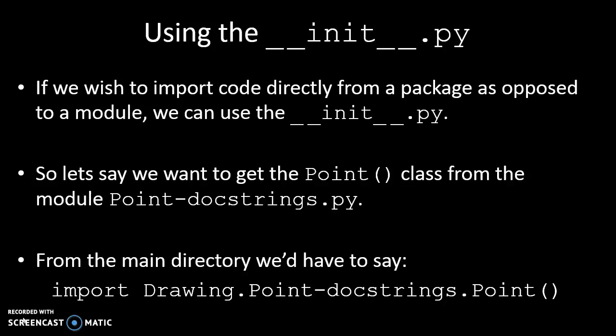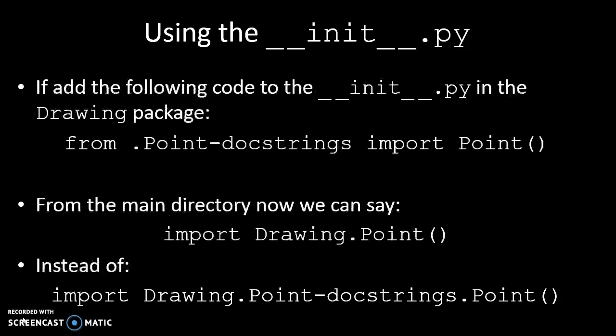So let's say we have the Point class and it's in point-docstrings. From the main directory, we'd have to say import from the folder Drawing from the module point-docstrings the class Point. But if we put the following code in __init__.py—if we said from .Point-docstrings import Point—so if anybody else is asking for Point, it's in point-docstrings, then in the main directory we can now say just import Drawing.Point instead of import Drawing.Point-docstrings.Point.